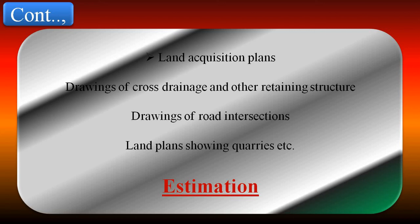Next is estimation. The major estimation should consist of a general abstract cost and detail estimation for each project. If the project work is proposed to be executed in stages, then the estimation should be prepared for every stage separately. If it is continuous, only one estimation is needed.